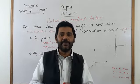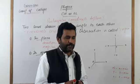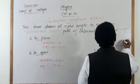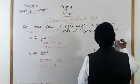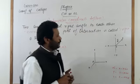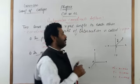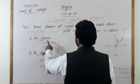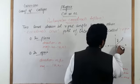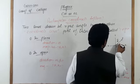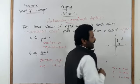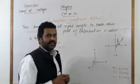Suppose a vector A is represented by line OP. The direction of this vector A is represented by an angle theta — the angle which the representative line of vector A makes with the positive x-axis in the anticlockwise direction.